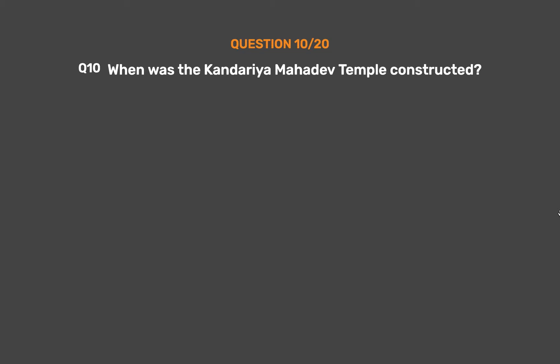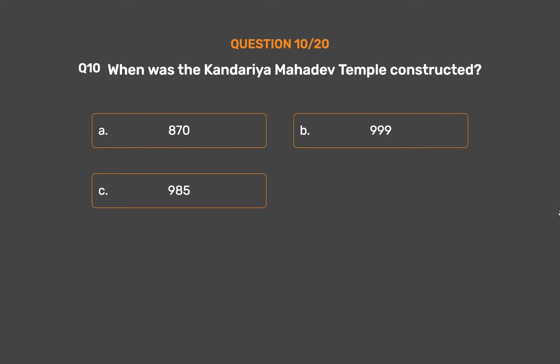Question No. 10: When was the Kandariya Mahadeva temple constructed? Option A: 870. Option B: 999. Option C: 985. Option D: 965.